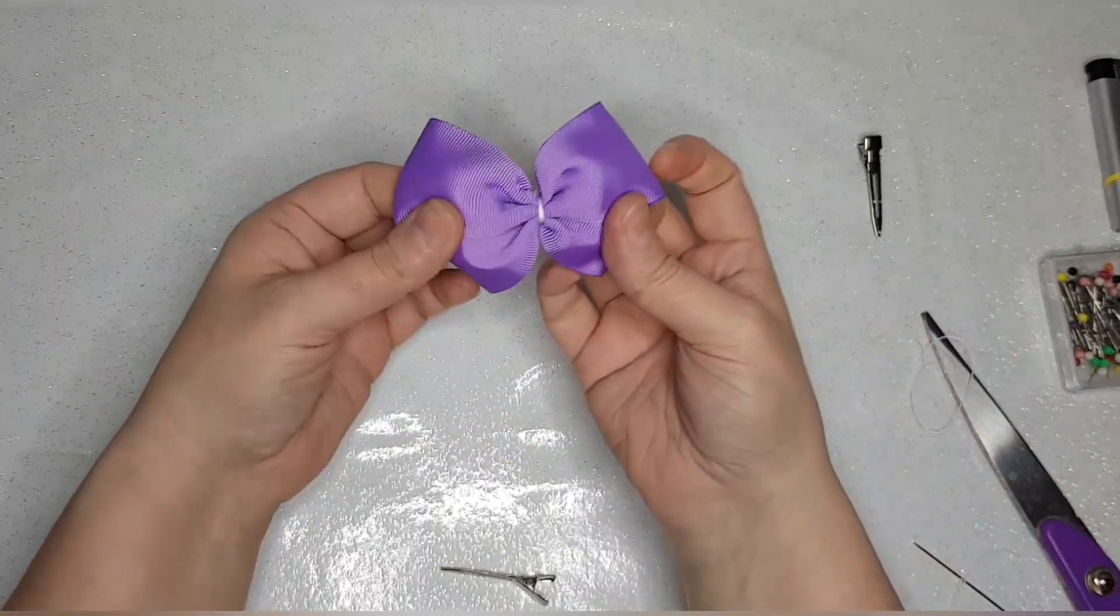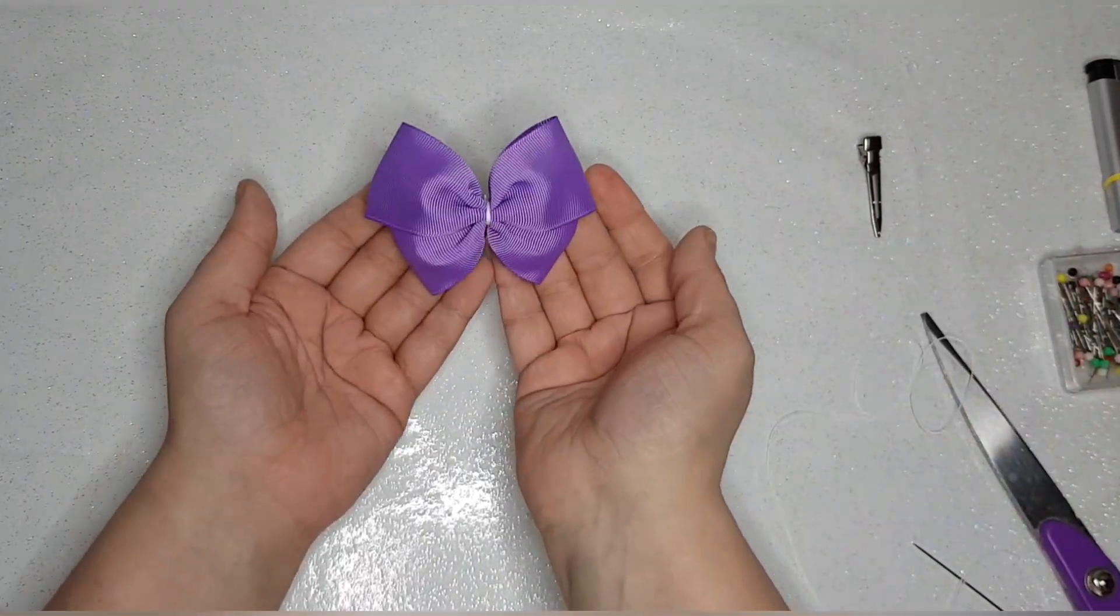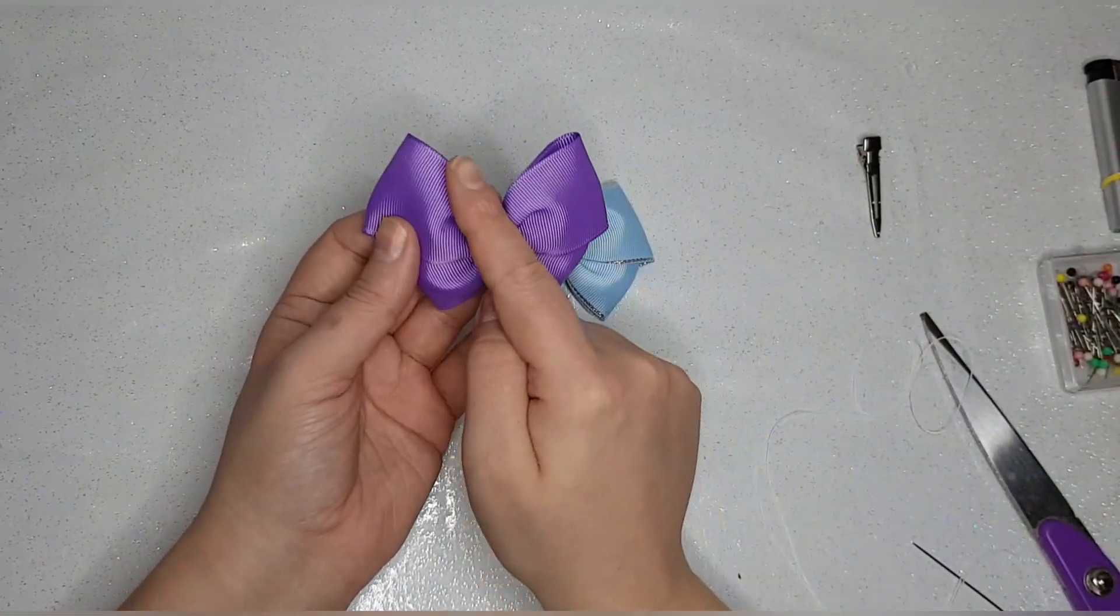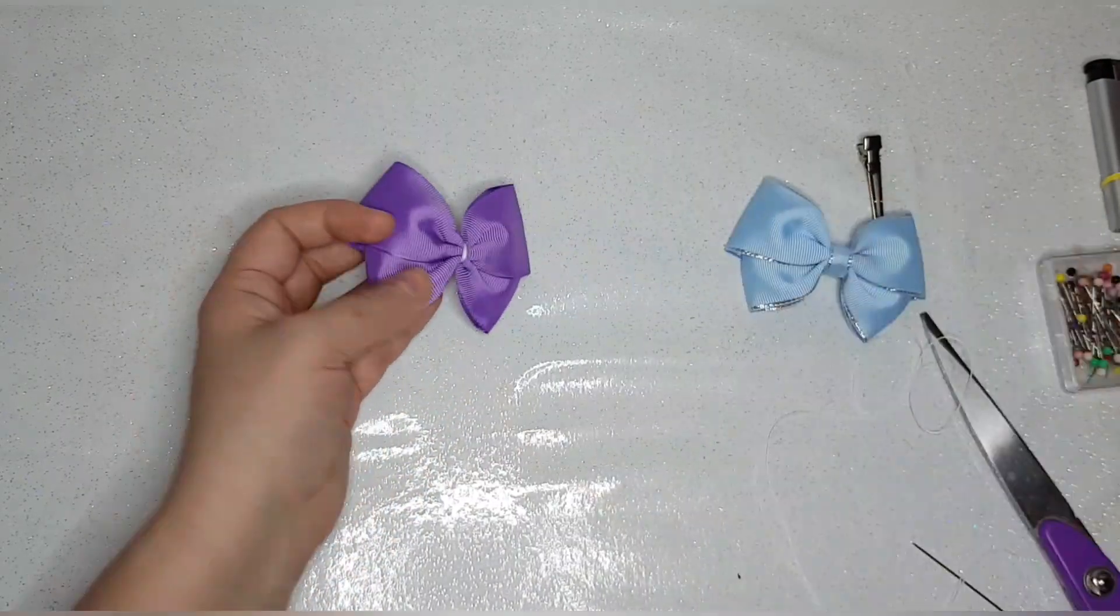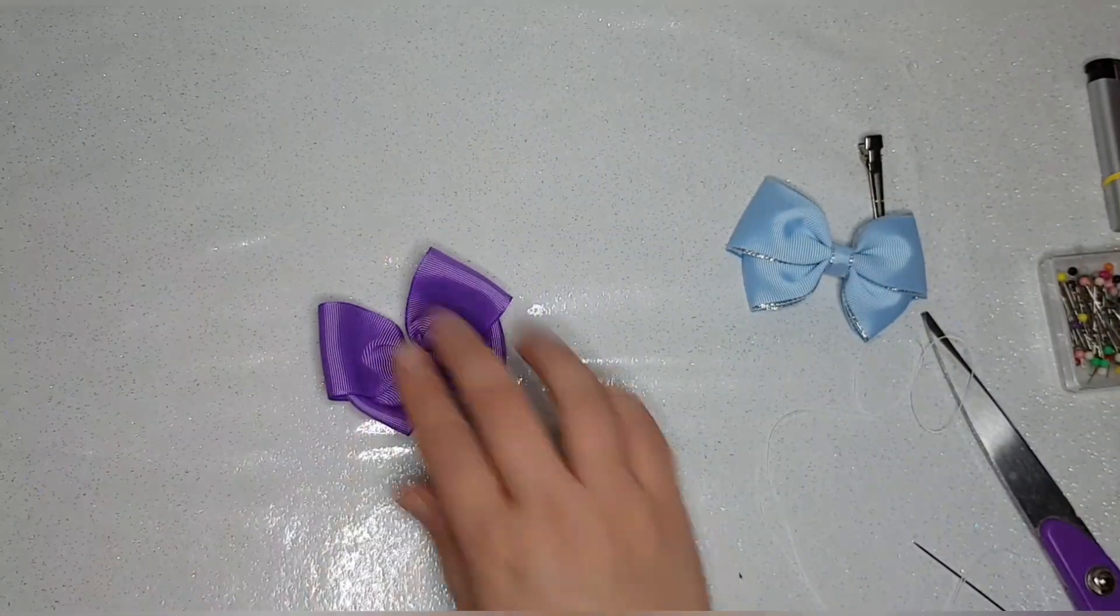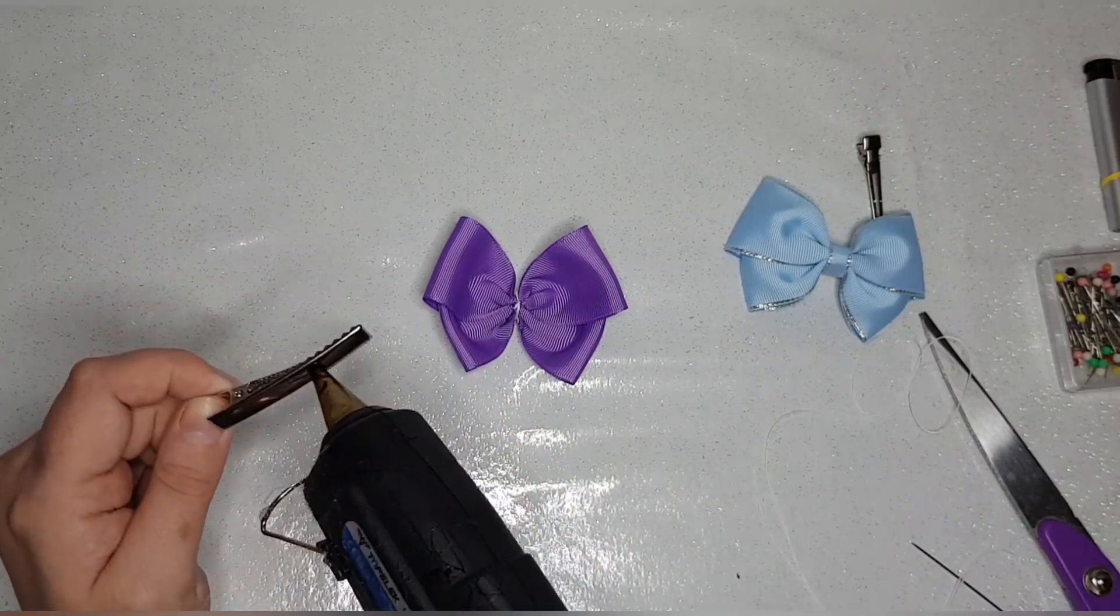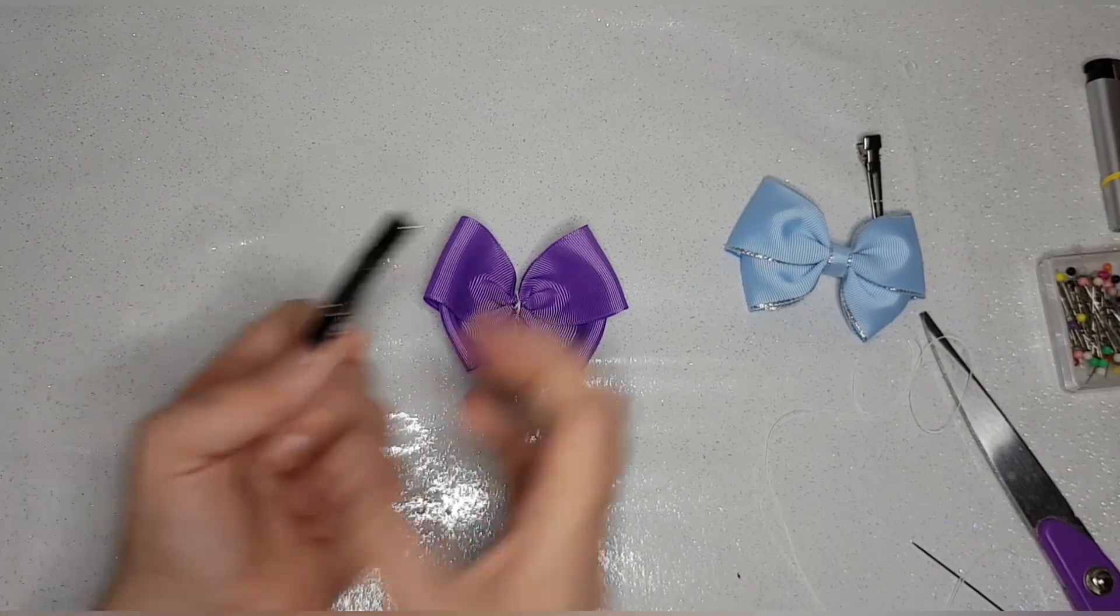Like I said, now you can keep it as a very simple butterfly type shape. If you wanted to, you could obviously add antennae, etc., whatever works for you. But I'm just going to keep mine nice and simple and just add the clip today.